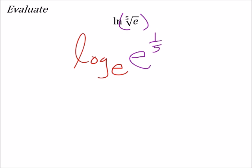So remember that rule where if the base is the same as the base for the exponent, then this stuff just cancels out and we end up with one-fifth as the answer to this one.